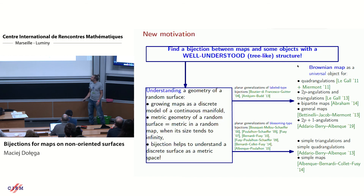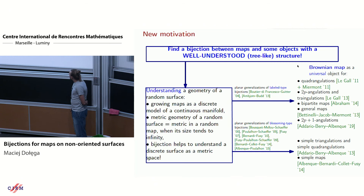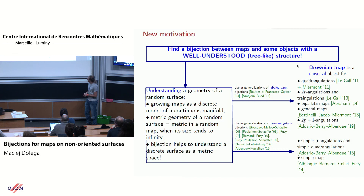This already gives a pretty good motivation for asking: is it possible to have similar bijections for surfaces other than the sphere? Because if yes, that would be a very good starting point for studying the random geometry of other surfaces.